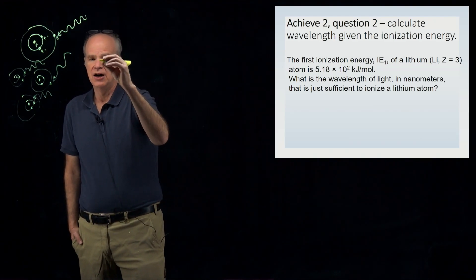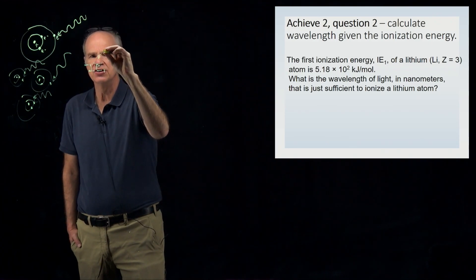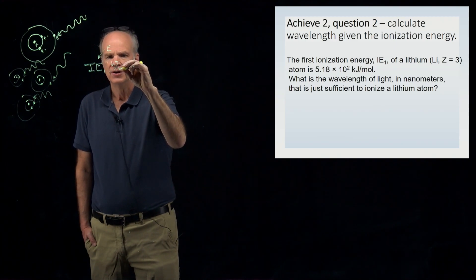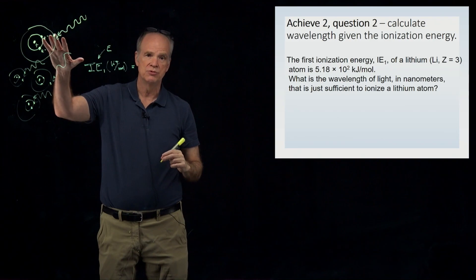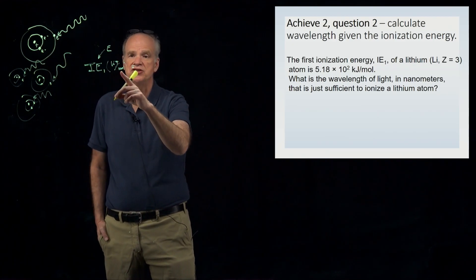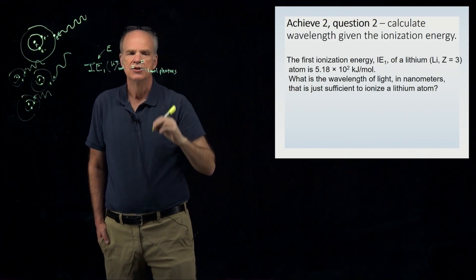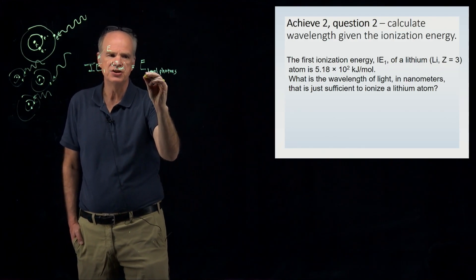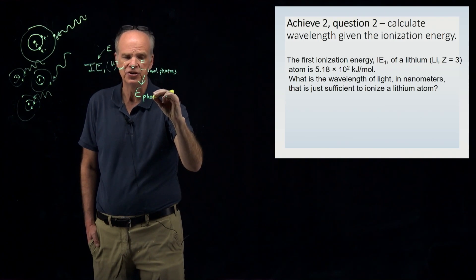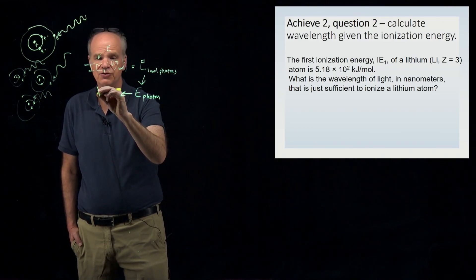The ionization energy is just an energy — call it E — and it equals the energy that one mole of photons must have to knock off a mole of electrons. So the ionization energy equals the energy of one mole of photons. From there, you can use Avogadro's number to find the energy of a single photon, E_photon. After that, you can convert the energy of a photon into its wavelength.